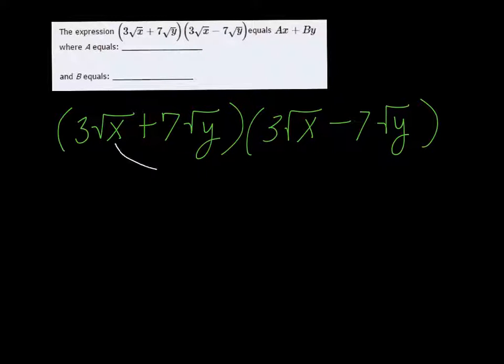So the first are 3√x times 3√x. Well, 3 times 3 is 9.